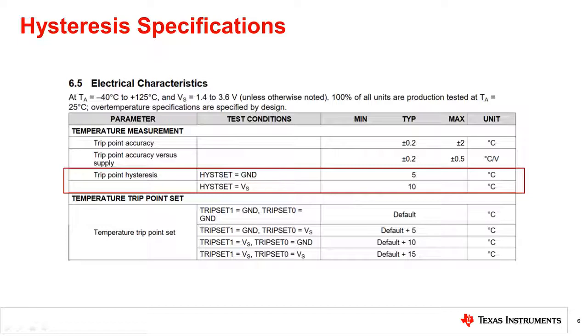The next and not so obvious parameter that must be taken into account is what is the accuracy of the trip point. The accuracy defines the bounds for the hysteresis band variation. As an example, for a hysteresis band of 10 degrees Celsius, a typical trip point accuracy of plus or minus 0.2 degrees Celsius will result in a hysteresis window between 9.79 degrees Celsius and 10.39 degrees Celsius.